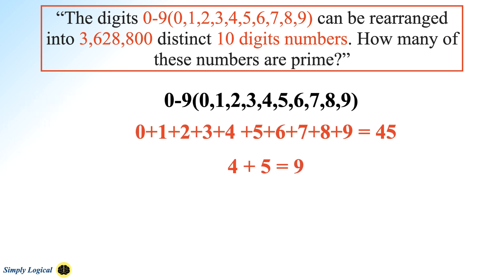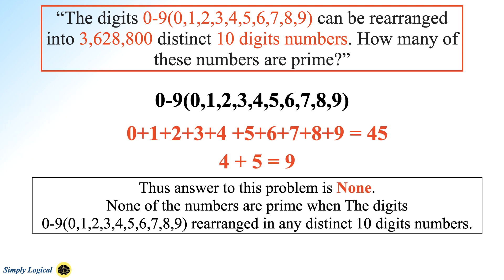Thus the answer to this problem is none. None of the numbers are prime when the digits 0 to 9 are rearranged in any distinct 10-digit numbers. To summarize, the sum of numbers from 0 to 9 is 45 and therefore can be divisible by 3. Since the number of factors is more than 2, none of the numbers are prime.